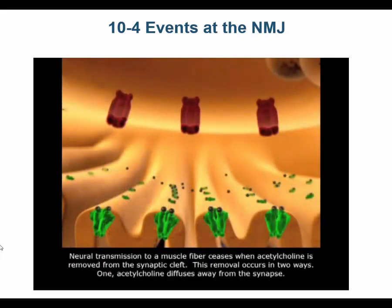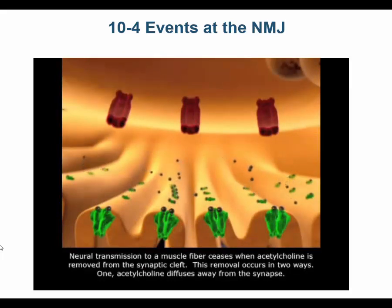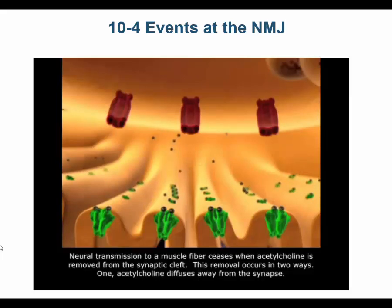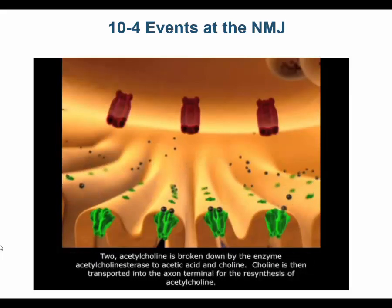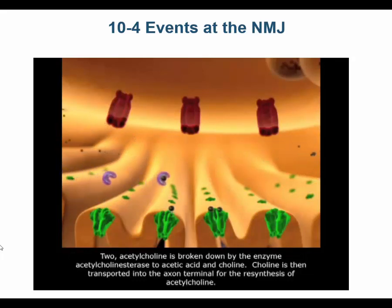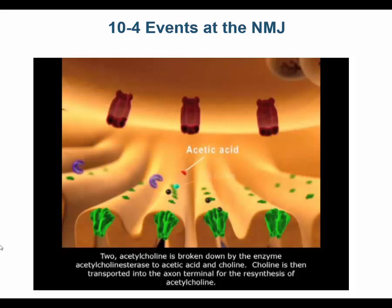Neural transmission to a muscle fiber ceases when acetylcholine is removed from the synaptic cleft. This removal occurs in two ways: first, acetylcholine diffuses away from the synapse; second, acetylcholine is broken down by the enzyme acetylcholinesterase to acetic acid and choline. Choline is then transported back into the axon terminal for the resynthesis of acetylcholine.